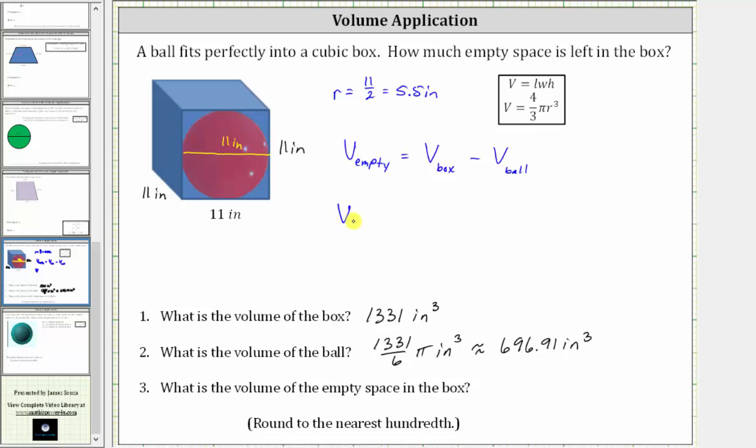So V-sub-empty is equal to the volume of the box, which is 1331 cubic inches, minus the volume of the ball. And because we're told to round to the nearest hundredth, we can go ahead and use the approximate volume of the ball, which is 696.91 cubic inches. But because this is an approximation, we should also change this equal sign to an approximate symbol.